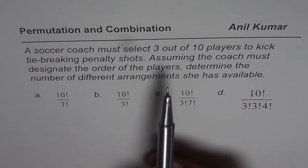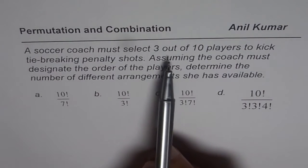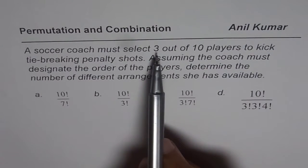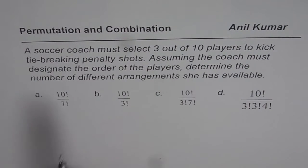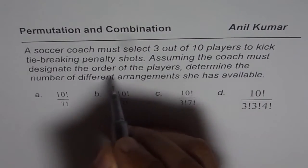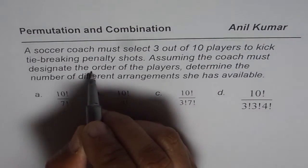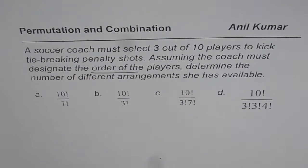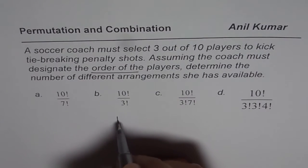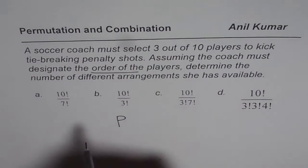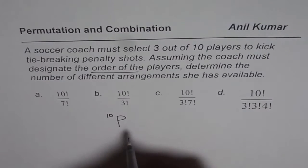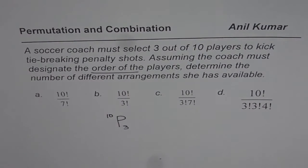Now in this case, it is important to note that we are selecting 3 out of 10, and order matters. Since order matters, it is the case of permutations. So there are 10 players and we are selecting 3 out of these 10 players.